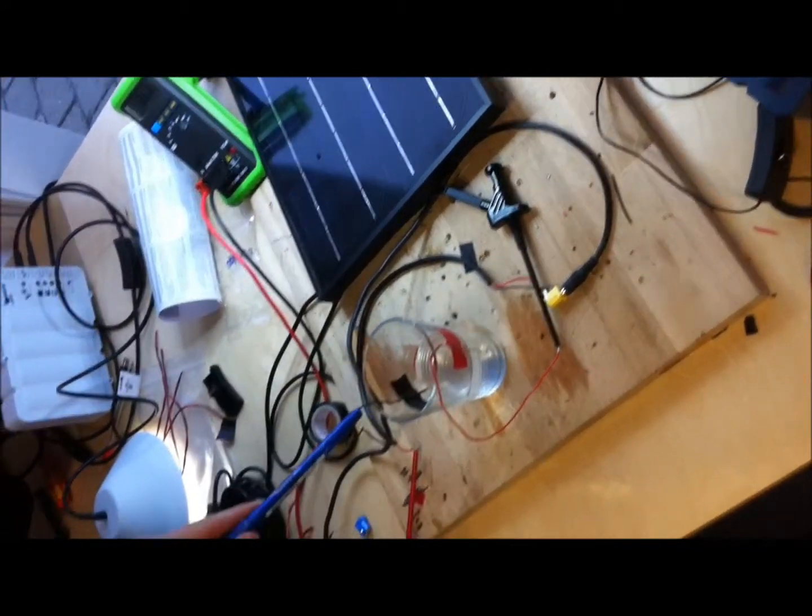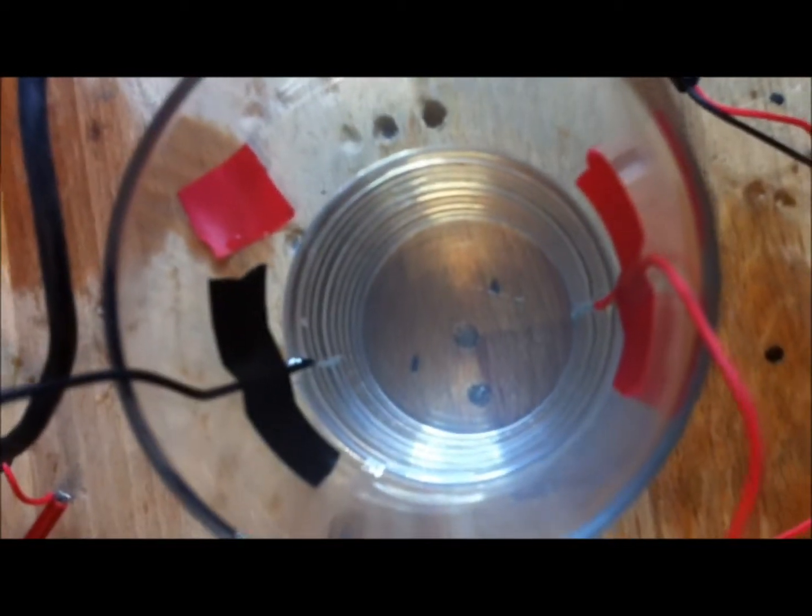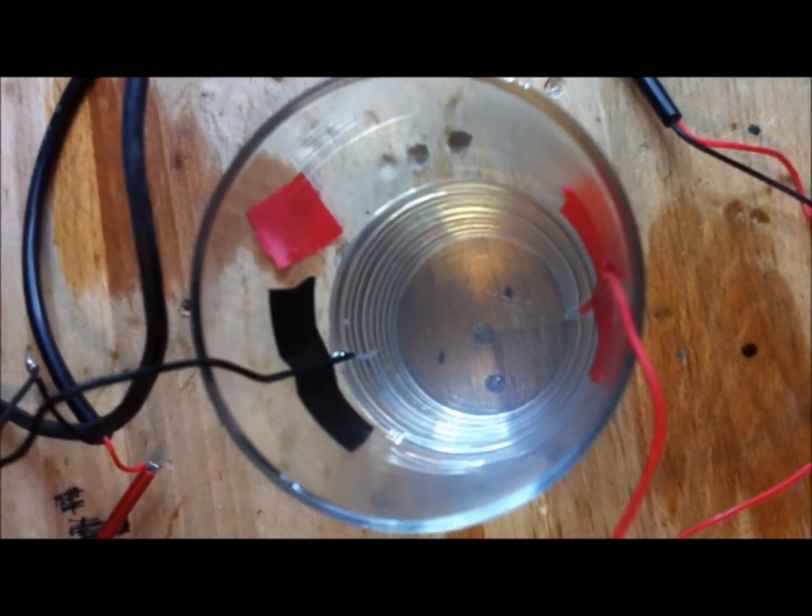As you can see right now, if you make a zoom here, you can see that the red cable is the positive of the solar panel. The black cable is the negative of the solar panel.